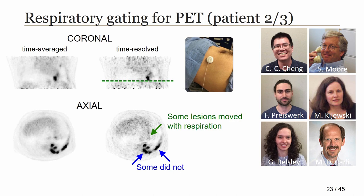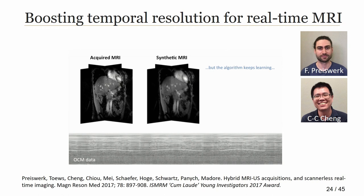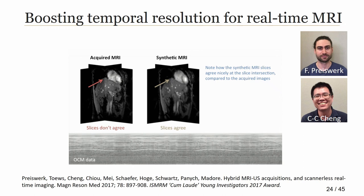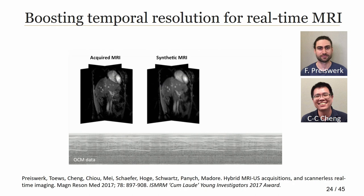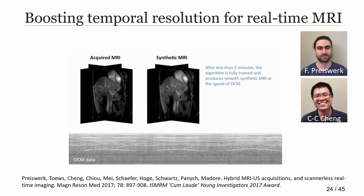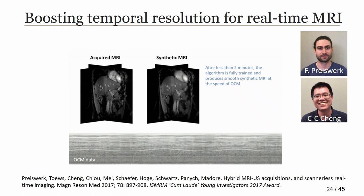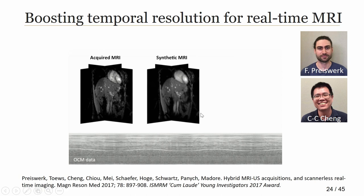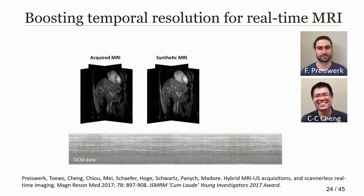A more complicated application is to boost temporal resolution in real-time MRI. Here, two different slices — sagittal and coronal — are acquired in succession with fairly low temporal resolution. But if we further include the high-temporal-resolution signal from the OCM sensor, then we can reconstruct images with higher temporal resolution where the motion is better captured. If you were trying to track a piece of anatomy, it could be easier in the dataset that has higher temporal resolution, putting both MRI and ultrasound streams into account in the reconstruction process.